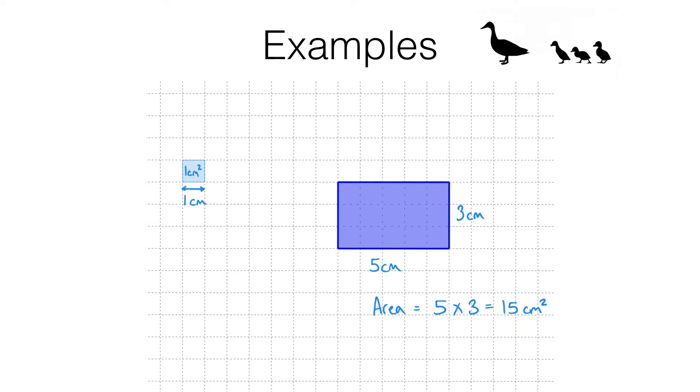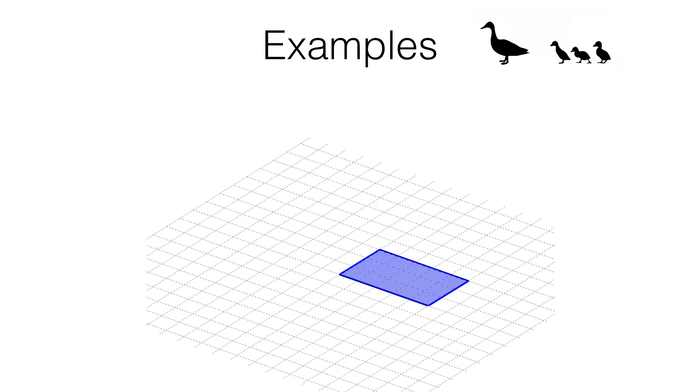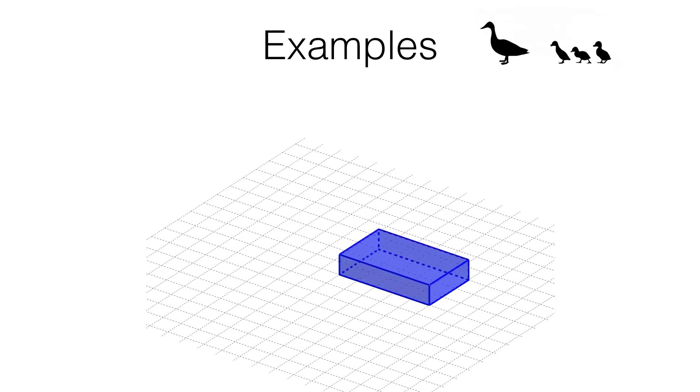Now we can extend this rectangle in a third direction to form a three-dimensional object like this. This is a cuboid. If we want to know how much space an object takes up in three dimensions we need to work out its volume and that's what this video is about.